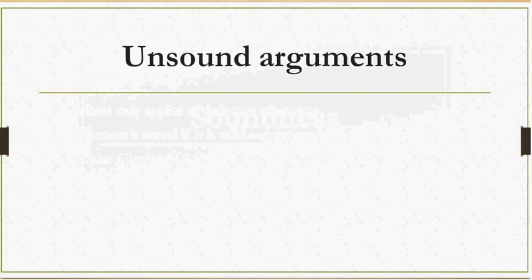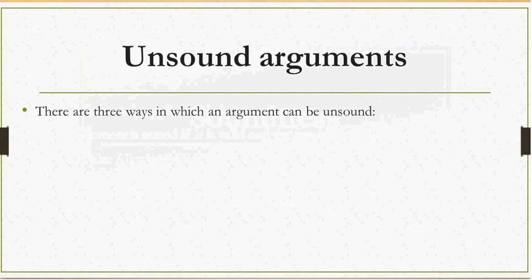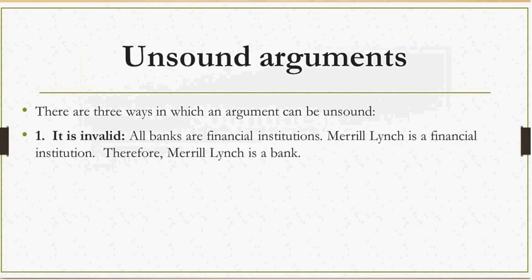Let's talk about unsound arguments. There are three ways an argument can be unsound. First, it is invalid. Here's an example: All banks are financial institutions. Merrill Lynch is a financial institution. Therefore, Merrill Lynch is a bank. To understand why this argument is invalid, you need to go back and watch the last video on validity.